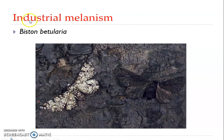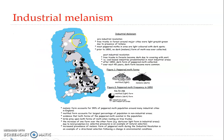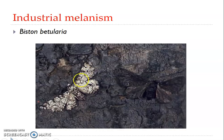The peppered moth was common in England and appeared in two forms: light or non-melanic forms and dark or melanic forms — also referred to as carbonaria. The normal light form of the moth is spotted white due to the absence of melanin pigments, while the dark forms had melanin pigments. Kettlewell conducted an extensive survey on the relative abundance and distribution of both forms across different parts of Britain.